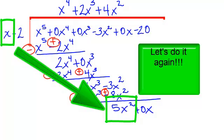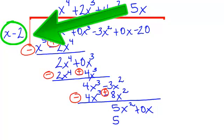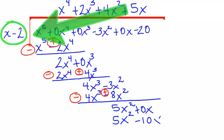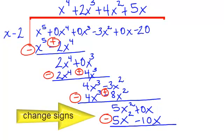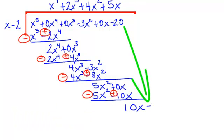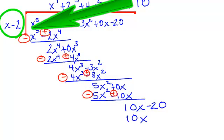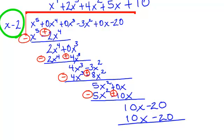Let's do it again. x will go into 5x squared — that would be a positive 5x. 5x times x is 5x squared, and 5x times negative 2 is negative 10x. Change those signs. I will have 10x and bring down my last term, which is negative 20. x will go into 10x — that is a positive 10 times. 10 times this binomial would be 10x minus 20. Draw your line and subtract, and your remainder is 0.